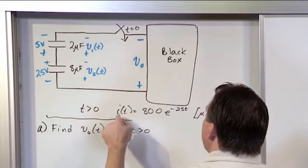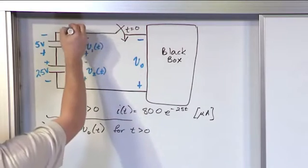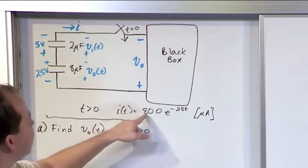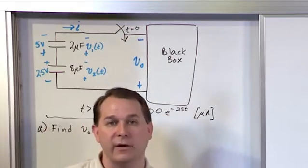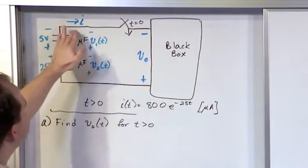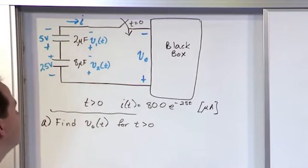From that moment on, we know that the current flowing in this circuit goes this direction, i. The current i is 800 times e to the minus 25t, in units of microamps - very small current. When we close that switch, we know the current is going that direction with this expression.